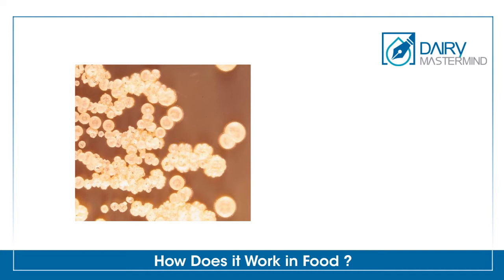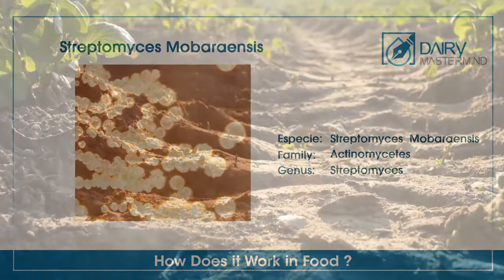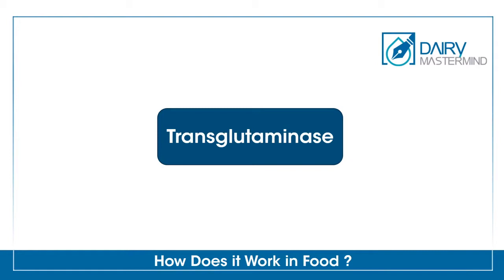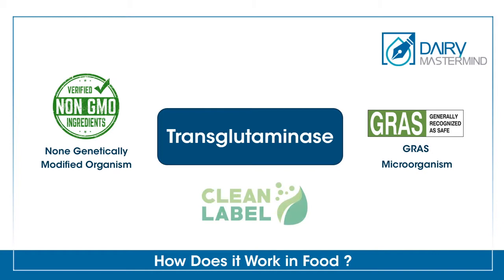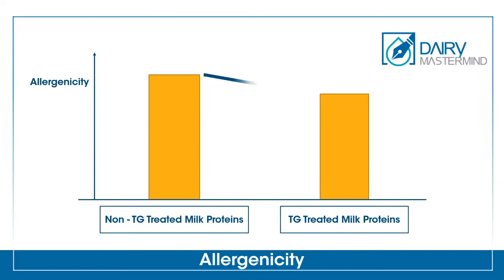Microbial transglutaminase that is not calcium-dependent is derived from Streptomyces muberansis bacteria, from the family Actinomycete and the genus Streptomyces. It is found predominantly in soil and is noted for its distinct earthy odour. As a food additive, transglutaminase is non-GMO and is obtained from grass microorganisms. Hence, it is considered a clean label, meaning it is not necessary to declare it on the label of the finished product. Research has shown that crosslinks created by TG can reduce the allergenicity of milk protein by 17%.